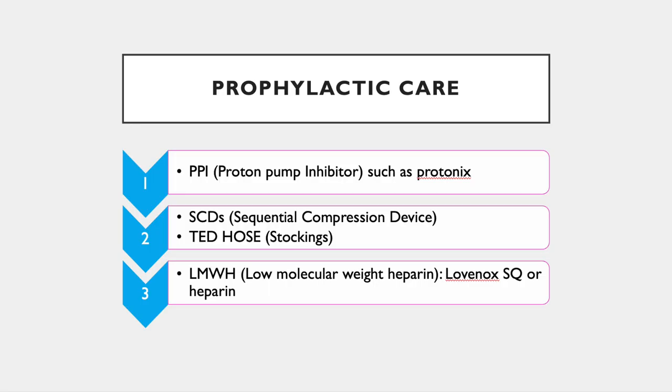Pulmonary embolism, also referred to as PE, is accountable for about a hundred thousand deaths each year just within the United States — and it's considered a preventable death. So when you're rounding for your patients and the team wants to know if your patient is on a PPI like Protonix, SCDs, Ted Hose, or Heparin Sub-Q to prevent a PE, there is a reason — our goal is to reduce the number of mortalities.